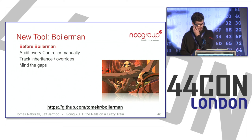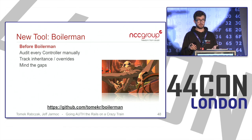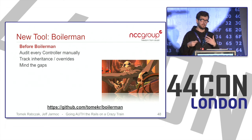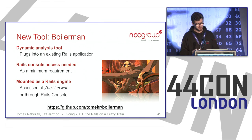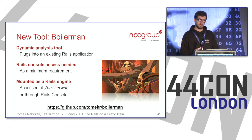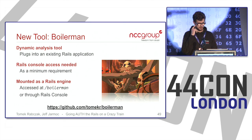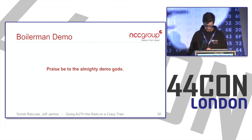This leads us to Boilerman, a new tool being released today. When assessing a Rails app, you need to look through all controllers, their inheritance chains, and the before actions declared at each level. Boilerman dynamically resolves all callbacks and presents them in a nice browser-based list. It hooks up to an existing application as a Rails engine. At minimum, you need Rails console access since it's a dynamic analysis tool. There is currently a dependency on the Rails engine part, which will hopefully be fixed after this talk.